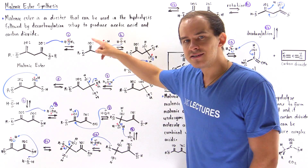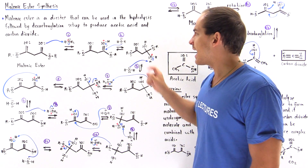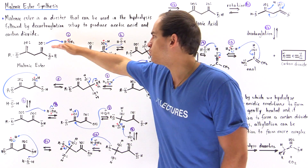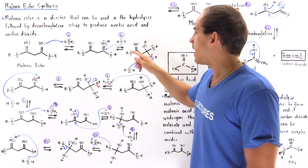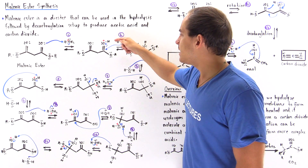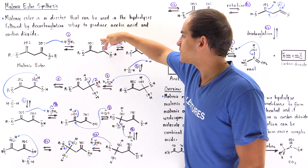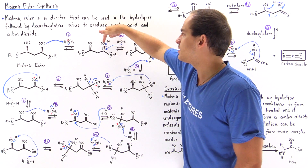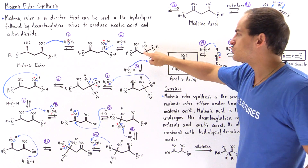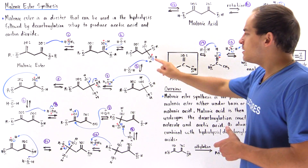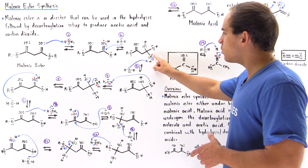The strong Lewis acid is resonance-stabilized and can react with the water molecule produced in step one. The water acts as a nucleophile, creating a bond between the oxygen and the carbon, displacing this pi bond, placing it onto this oxygen, and we produce a tetrahedral intermediate that contains a positive charge on the oxygen.